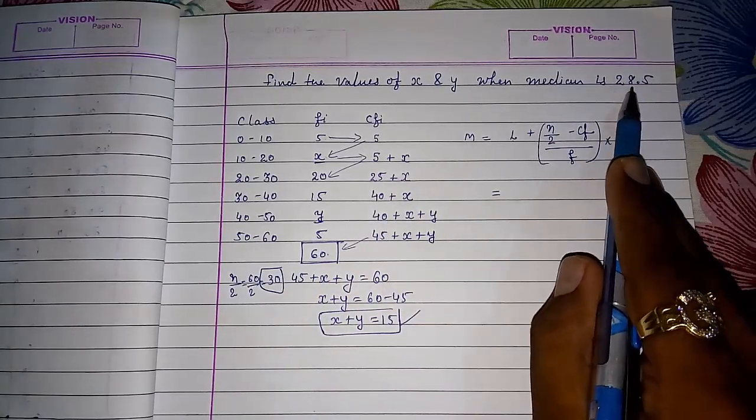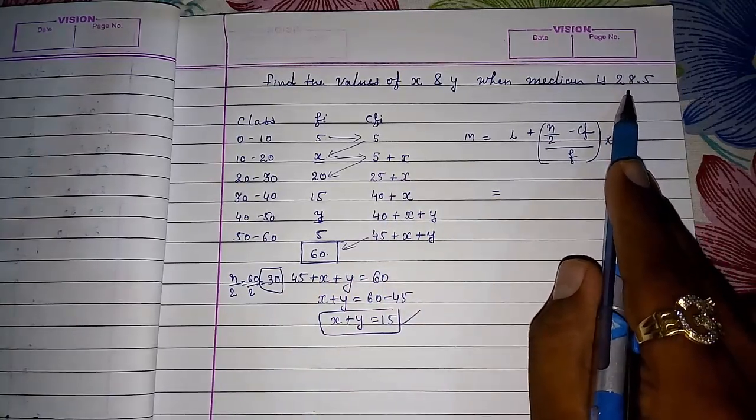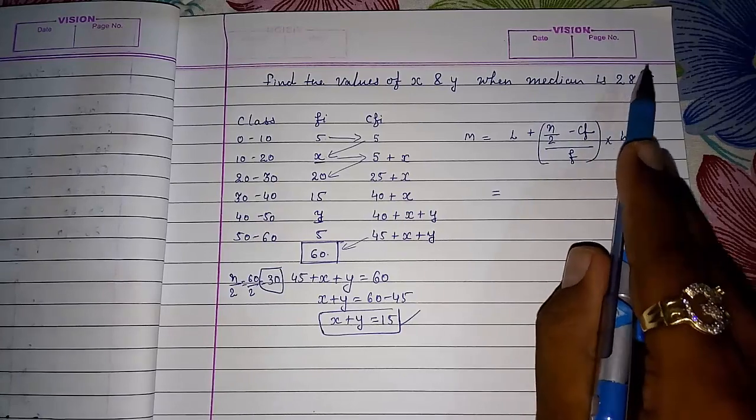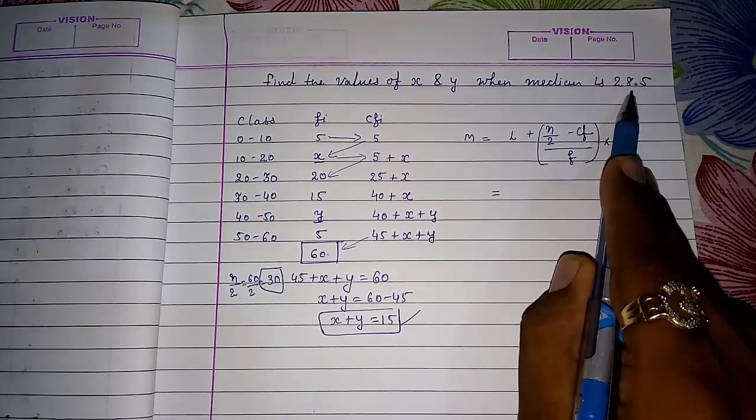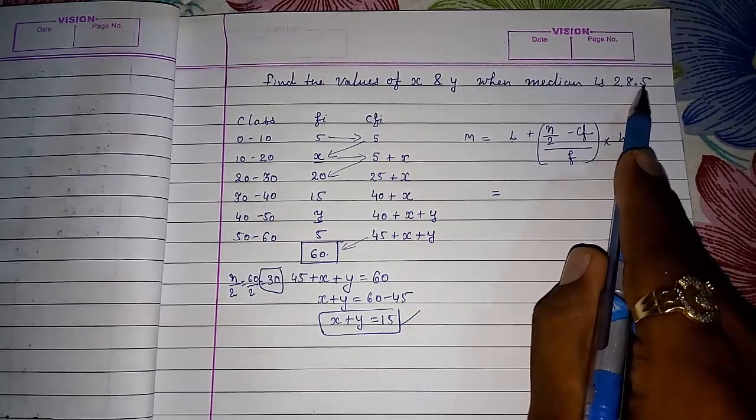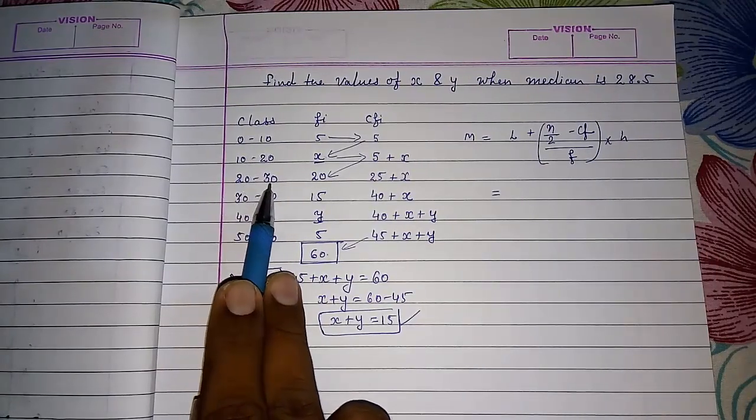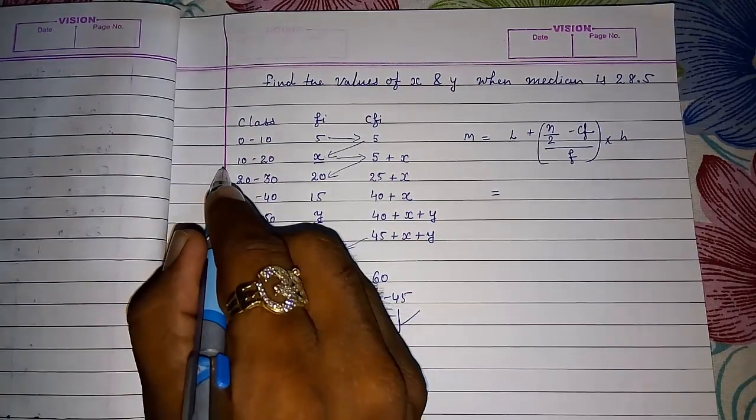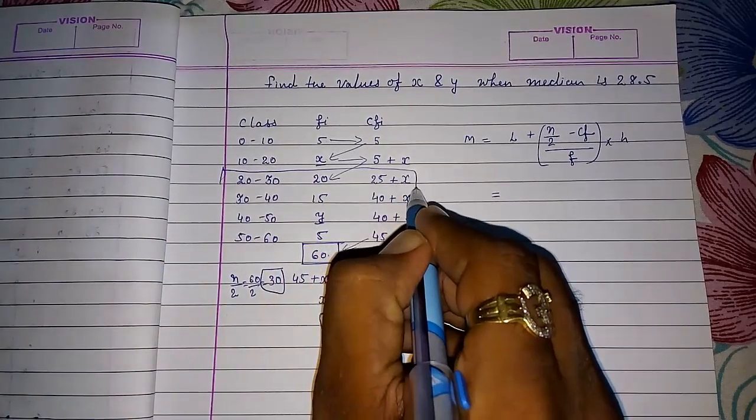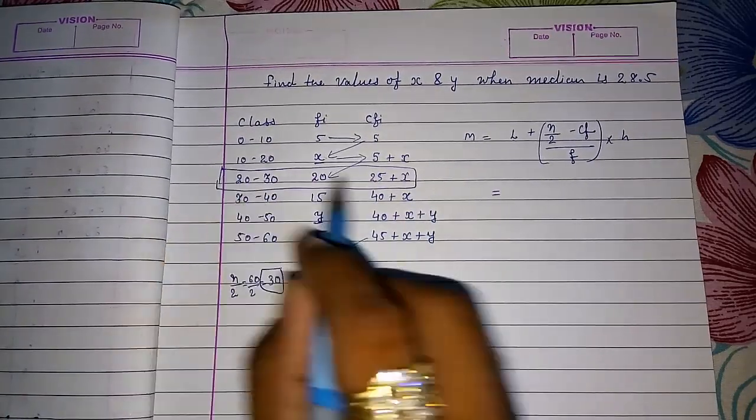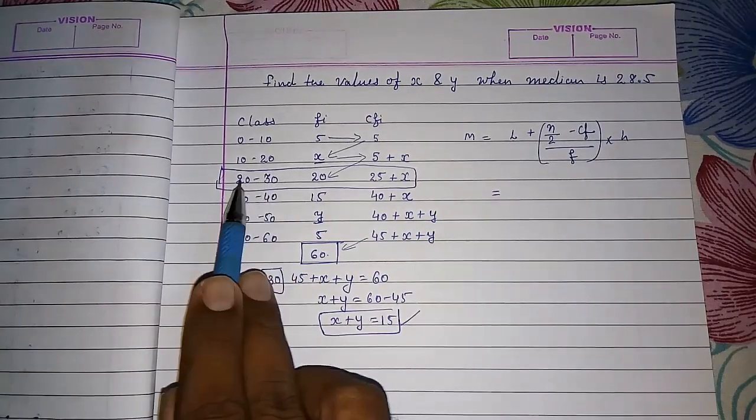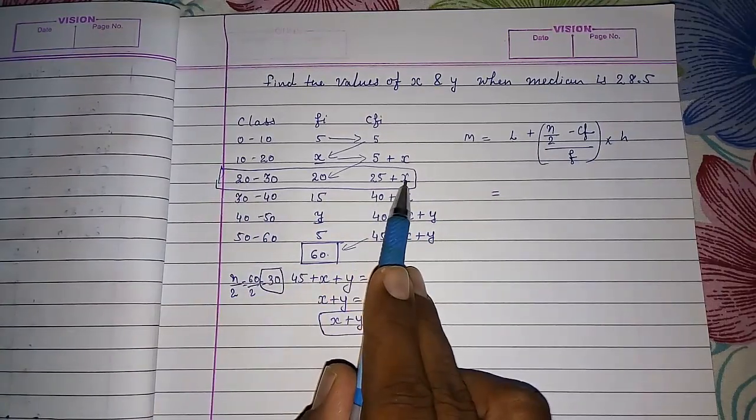But they had given us median. In median, I told you in my previous video also, median is always between the median class. So it's 28.5. So 28.5 is coming between this 20 to 30. So this will be our median class. Understand that 28.5 is between 20 to 30. So our median class will be this.